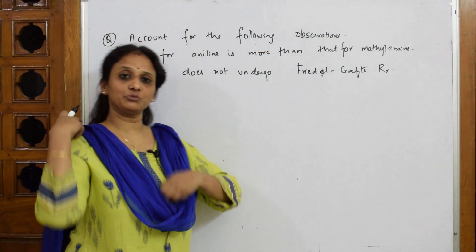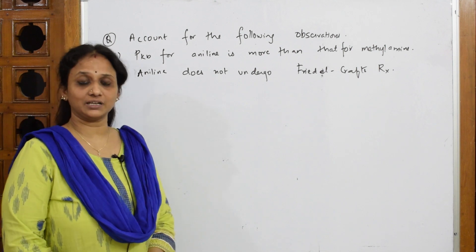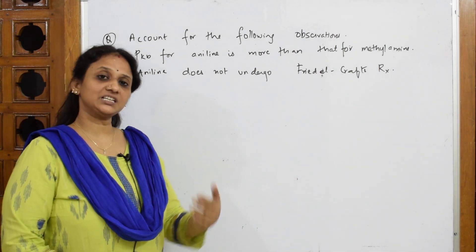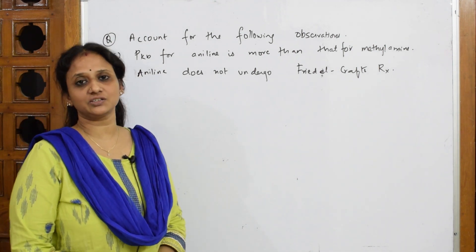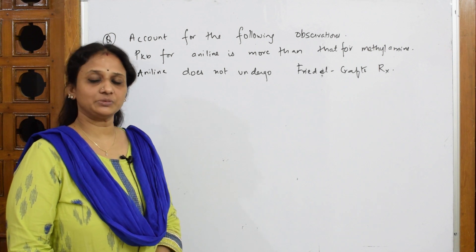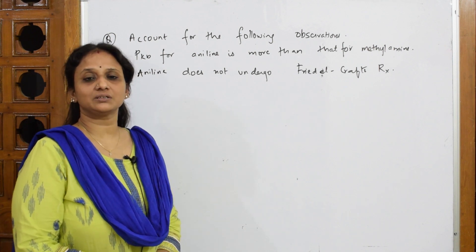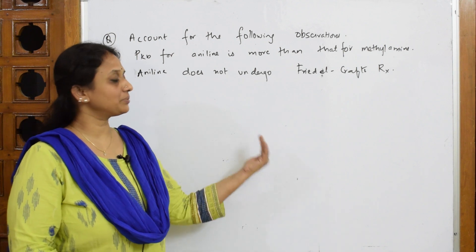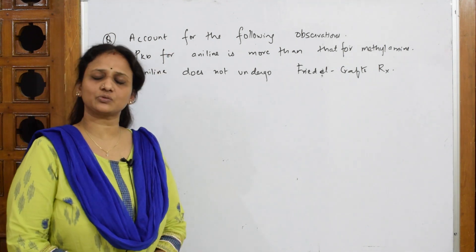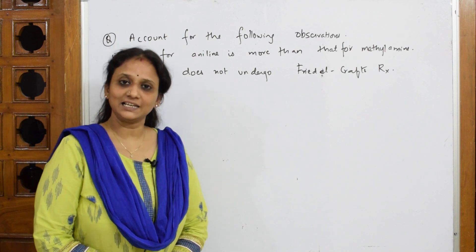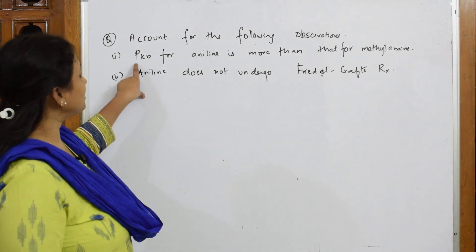Let us see one more type of question. Earlier we have seen 'complete the following,' and before that we saw increasing and decreasing order of basicity, solubility, and pKb values. Now we are coming back to one more concept where 'account for the following' is a quite common question type in board papers.